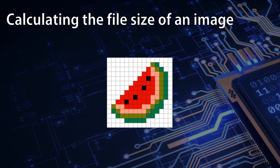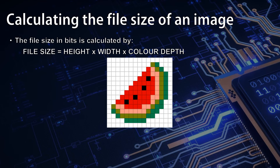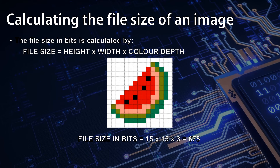You will need to be able to calculate the file size of an image. This is done using the formula: file size equals height in pixels times width in pixels times colour depth. The most common mistake people make is multiplying by the number of colours, not the colour depth needed to represent that many colours. Our example had 15 pixels by 15 pixels by a colour depth of 3, giving 675 bits. Dividing this by 8, we would get 84.375 bytes.